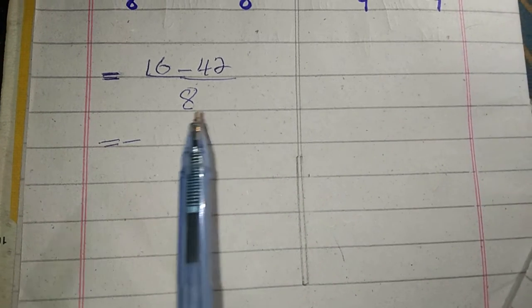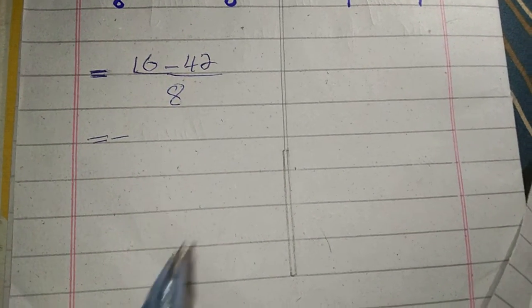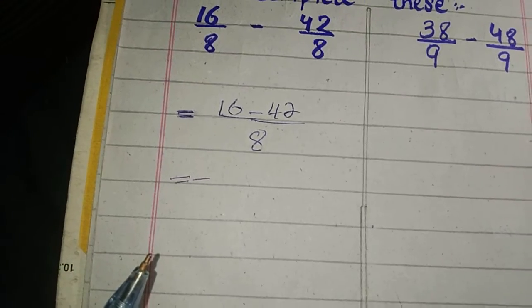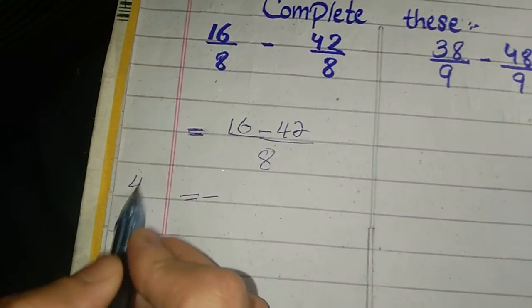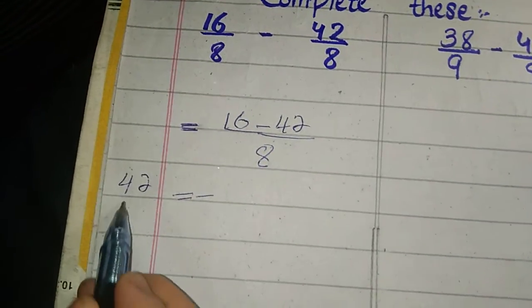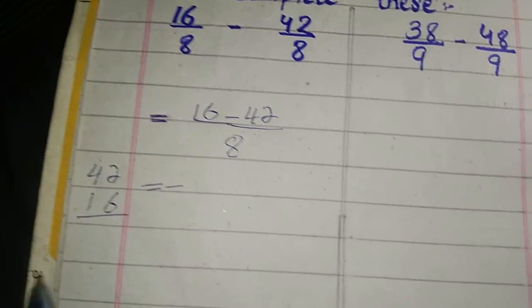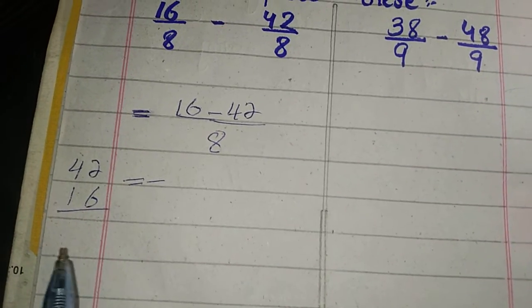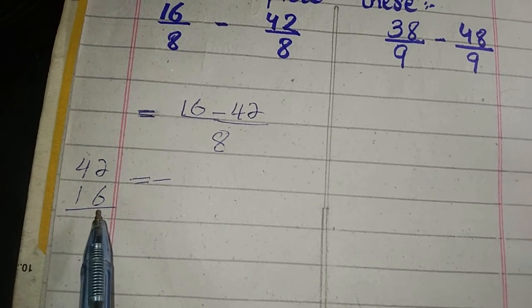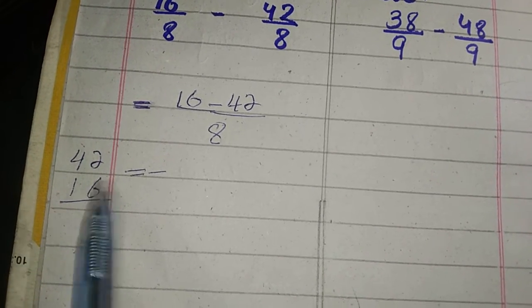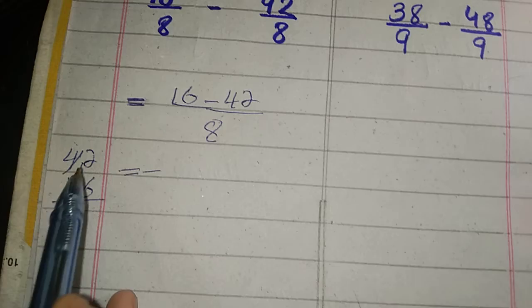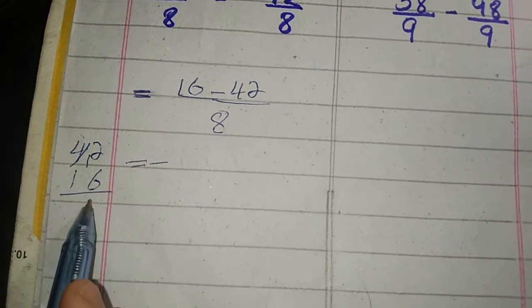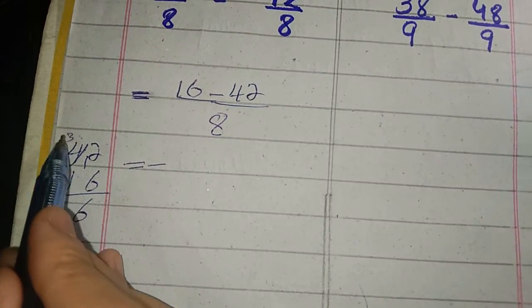Then 42 minus 16, what will be the answer? 2 is smaller, so we will take carry. It becomes 12. 12 minus 6 is 6, then 3 minus 1 is 2. It's 26.